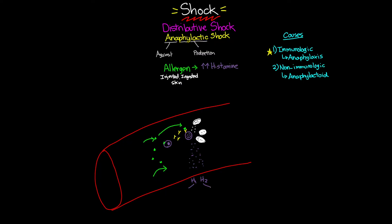When histamine binds the H1 receptor site, the first response is an increase in capillary dilation — the blood vessels dilate and increase in size. This is happening systemically throughout the entire body, and it's going to ultimately lead to a massive drop in our systemic vascular resistance, which means a massive drop in blood pressure.